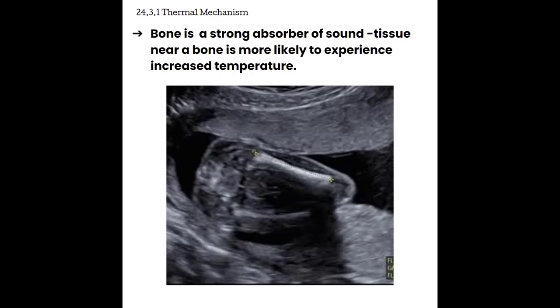We know that bone is a very strong absorber of sound. So tissue near bone is more likely to experience increased temperature. And we are particularly concerned about this with fetuses. Fetal tissue is more likely to experience temperature changes. Therefore, the thermal indices need to be carefully observed during fetal ultrasound. In this image here, we can see the femur of a fetus. It is the tissue around this femur, especially as this bone calcifies and hardens during gestation. The tissue around this is more likely to heat up because of this bone absorbing ultrasound energy.